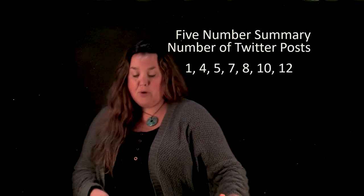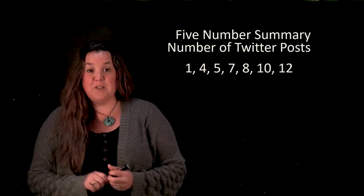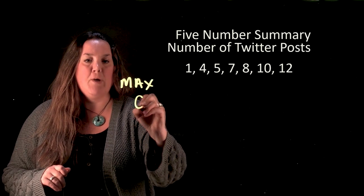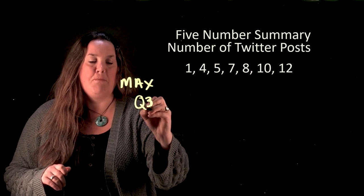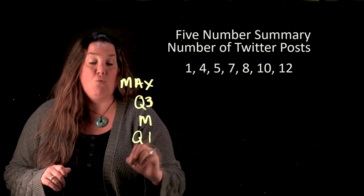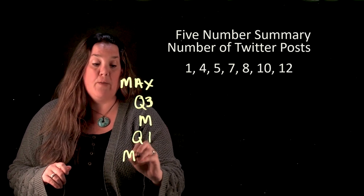So as a reminder we have five numbers in the five-number summary. I know, five numbers. We have a maximum. We have Q3 which remember means the third quartile. We have the median. We have Q1 which is our first quartile. And then we have the minimum.